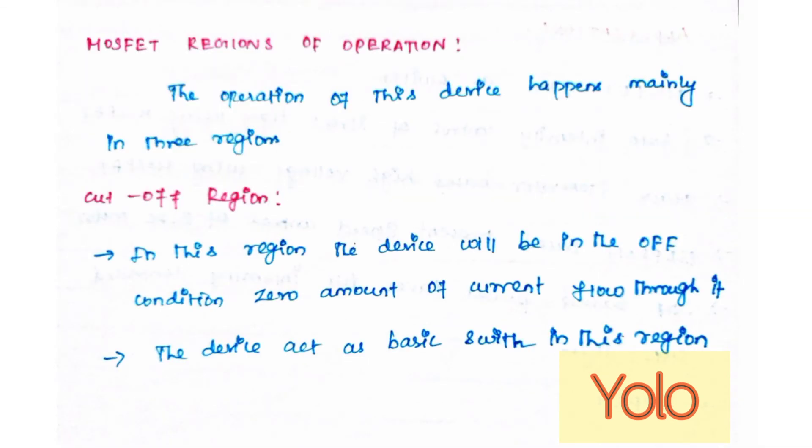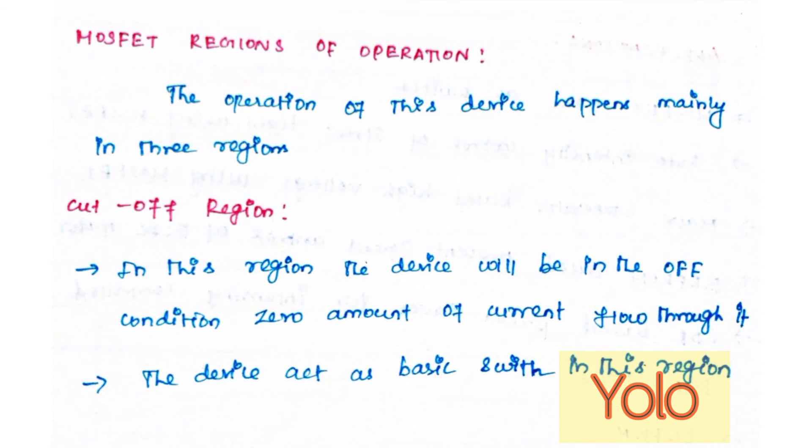MOSFET regions of operation: The operation of this device happens mainly in three regions. First one, cutoff region. Second one, saturation region. And third one, linear or ohmic region. In cutoff region, the device will be in the off condition. Zero amount of current flows through it. The device acts as a basic switch in this region. In saturation region, the voltage across...